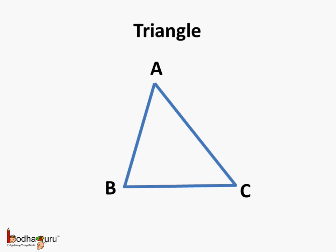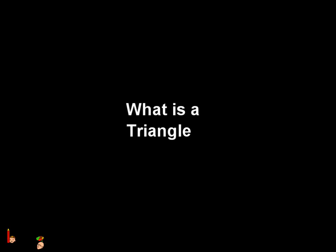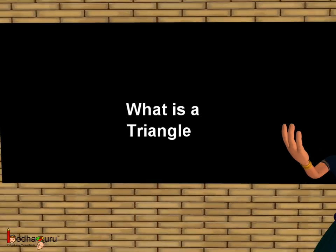So now we know a triangle is a three-sided closed figure which has three angles — hence it is called a triangle. That's all for now. Bye-bye children.